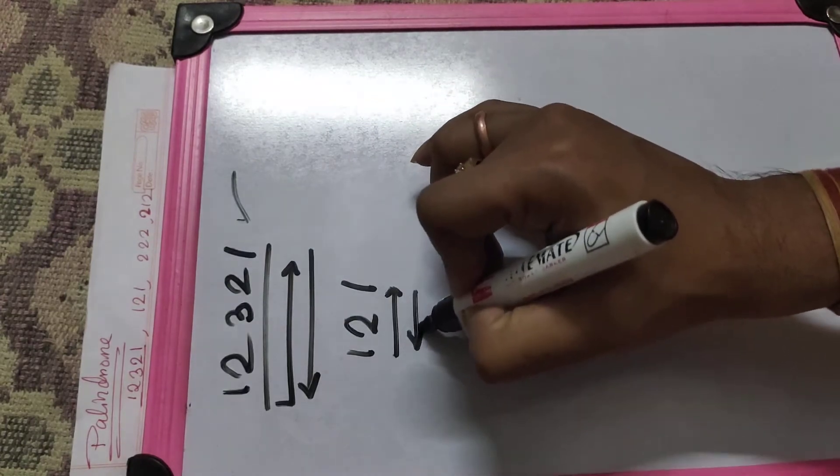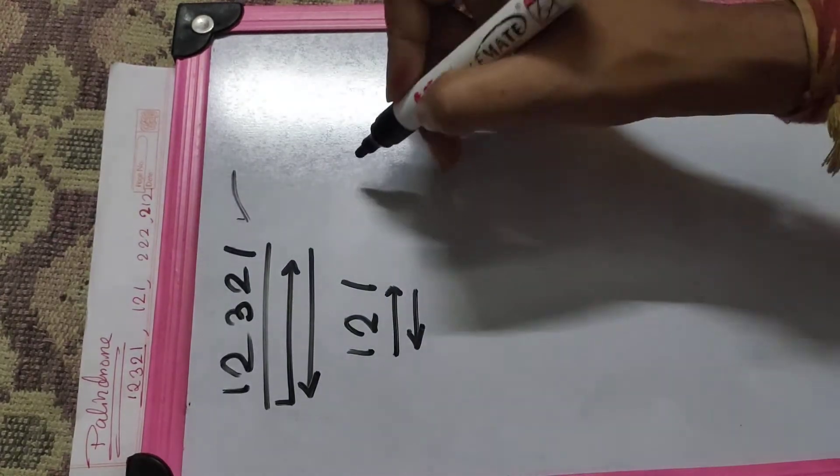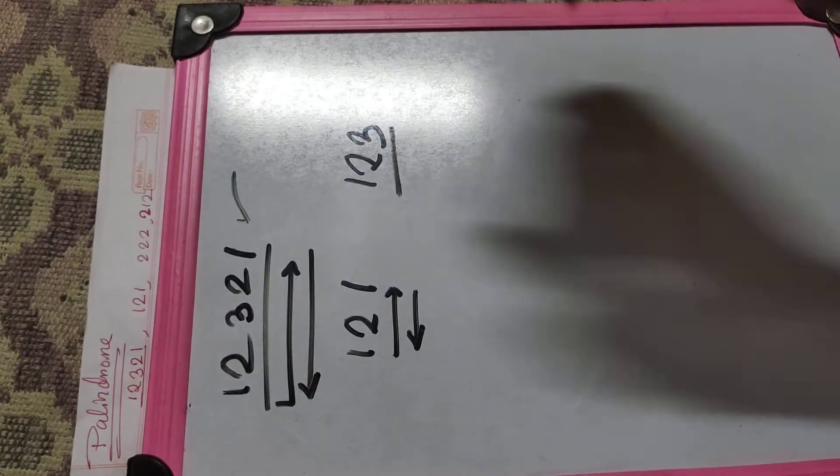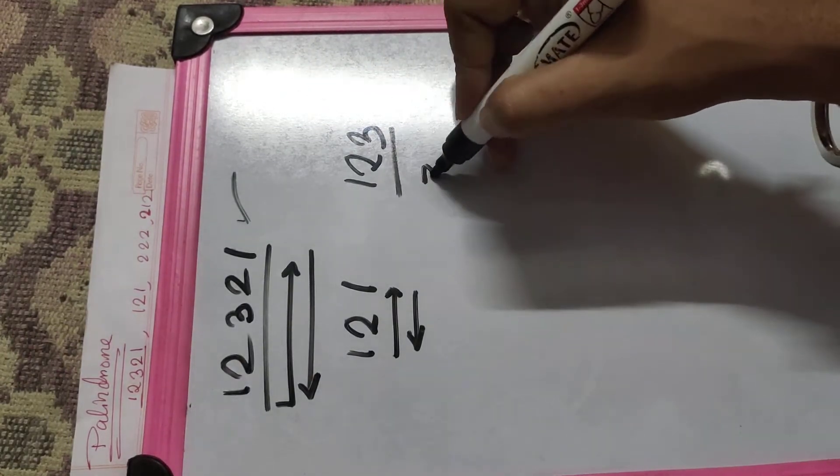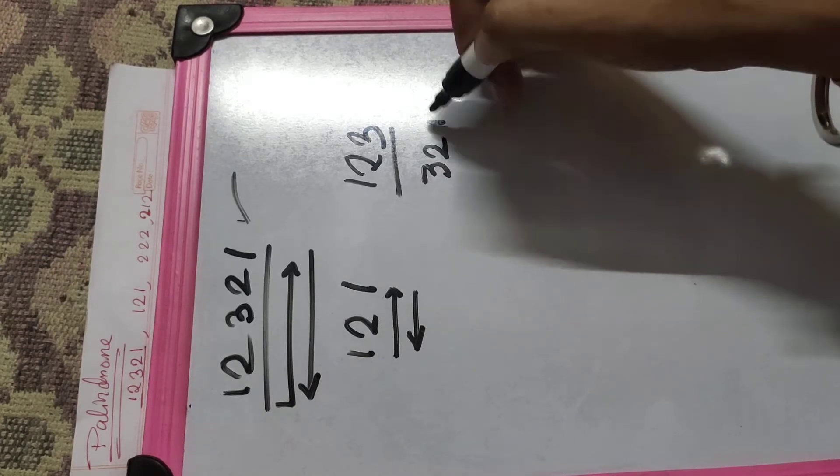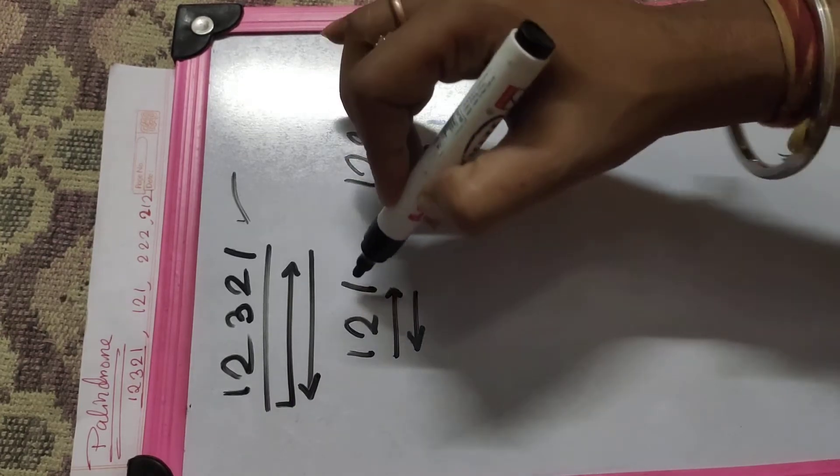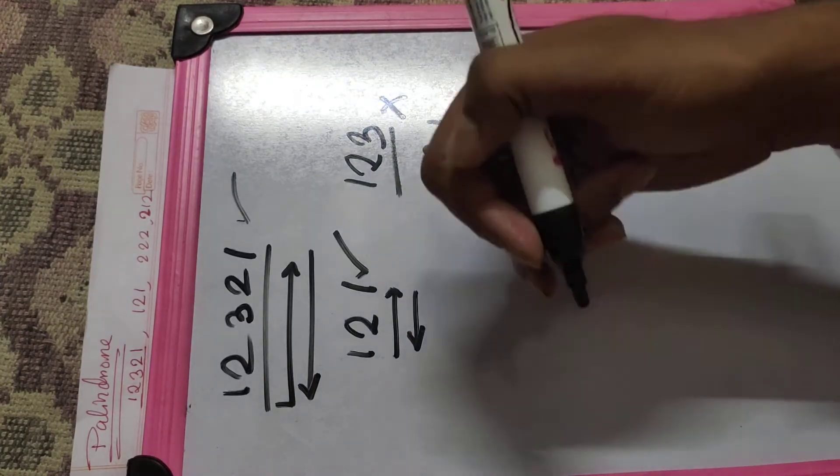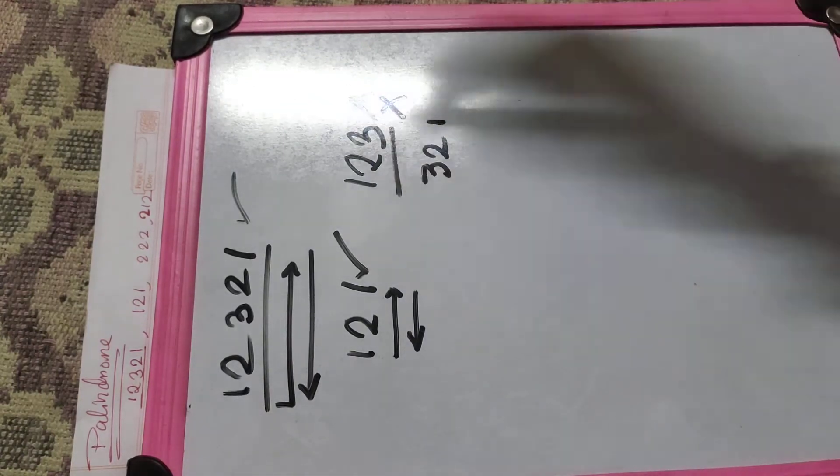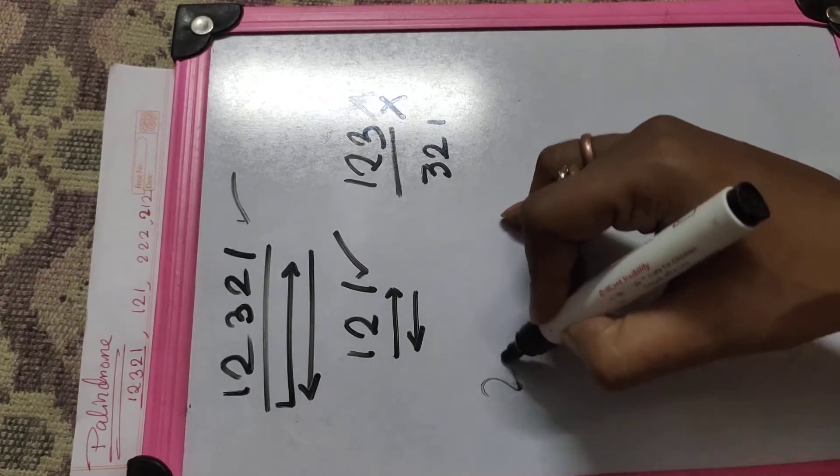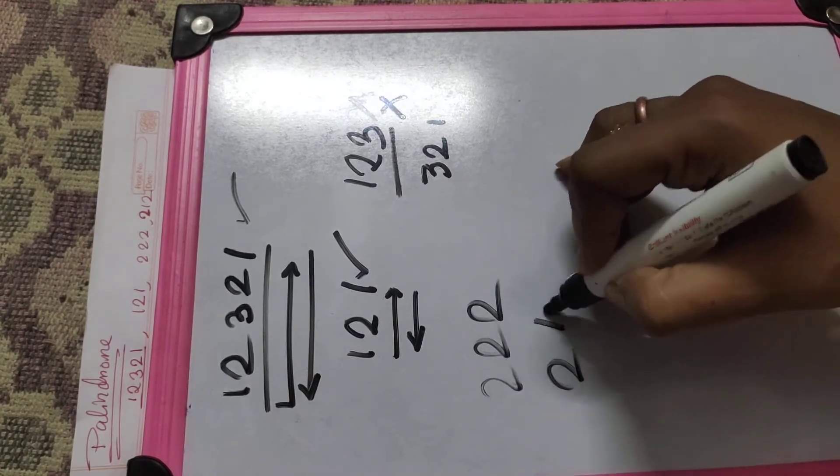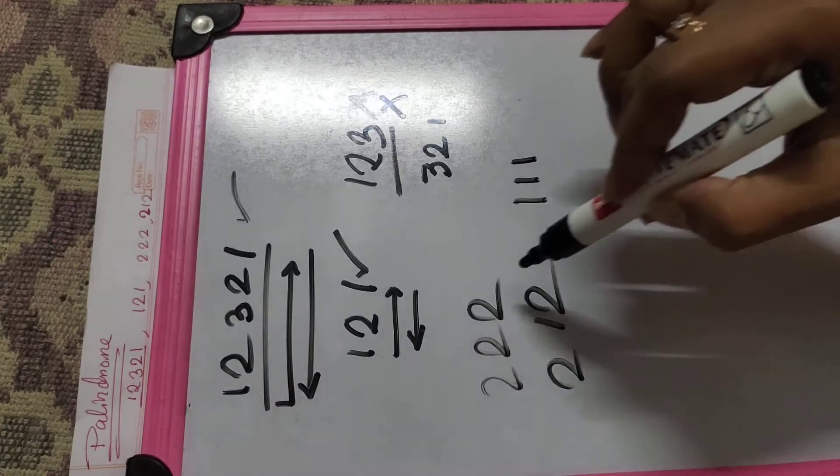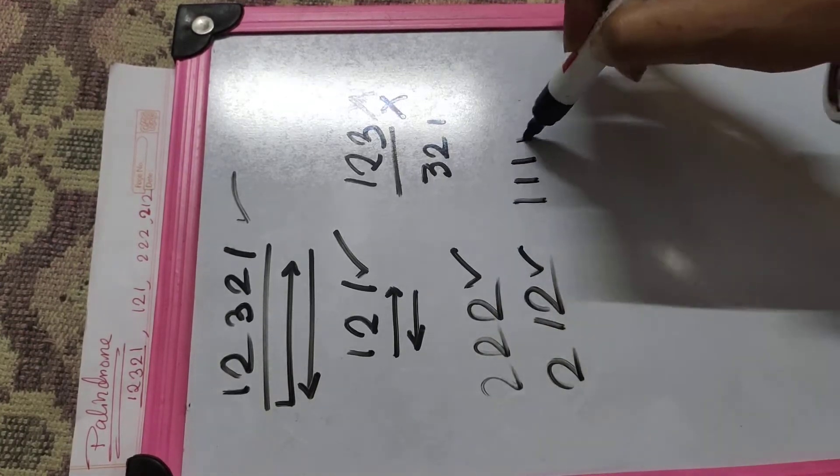But if the value is 123, then the reverse value is 321. Both are not the same, so these are not palindrome numbers. More examples like 2212, 22, 121 - all are palindrome numbers.